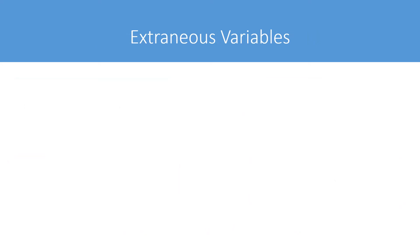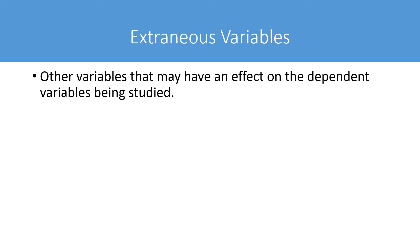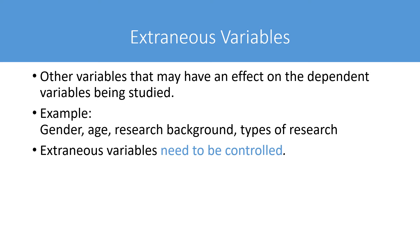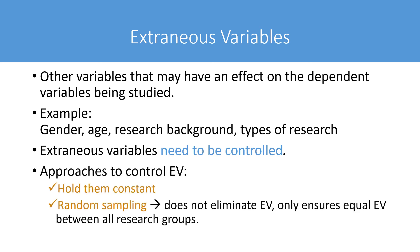So what are extraneous variables? Extraneous variables are other variables that may have an effect or impact on the dependent variable being studied. In our previous research question, gender, age, research background, and type of research of the graduate students could impact the student's thesis completion rate — so we want these extraneous variables to be controlled. There are several approaches: holding the extraneous variables constant, or doing random sampling. Random sampling does not eliminate extraneous variables, but it ensures they are distributed across all research groups.